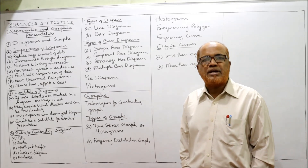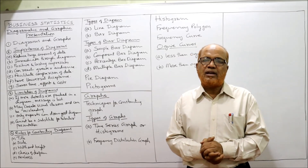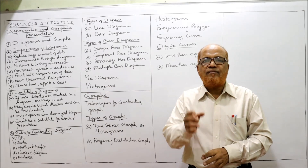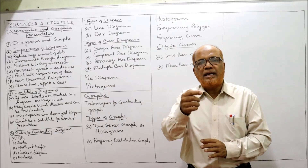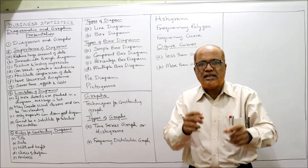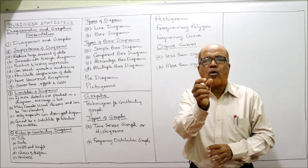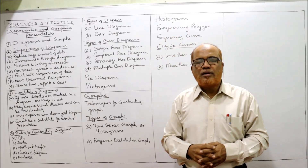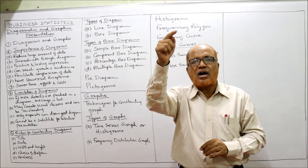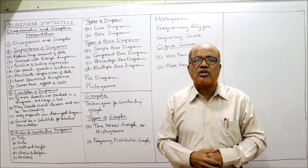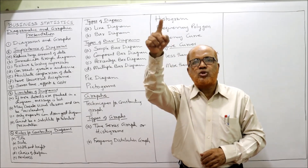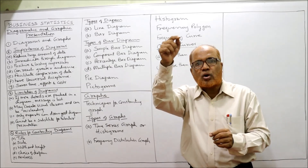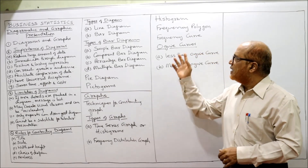Histogram is the most commonly used graph. On the x-axis we take time and on the y-axis we take frequency, drawing rectangles called histograms — for example, for each year on the x-axis, a rectangle showing that year's sales on the y-axis is drawn. Frequency polygon: when the histogram is completed, a smooth curve is drawn from the midpoint of each rectangle, joining all the midpoints to get the frequency polygon. Frequency curve: a smooth curve drawn joining all the tops of the histogram gives the frequency curve.